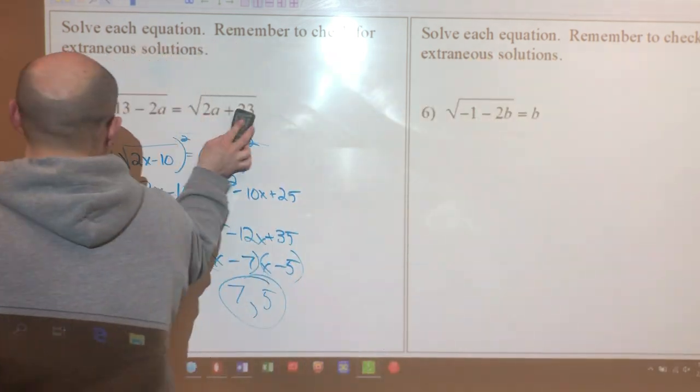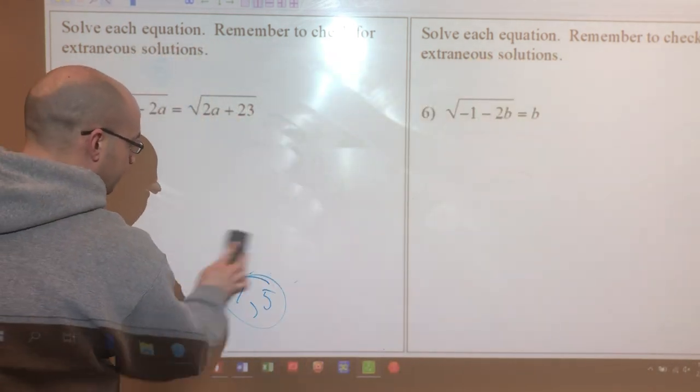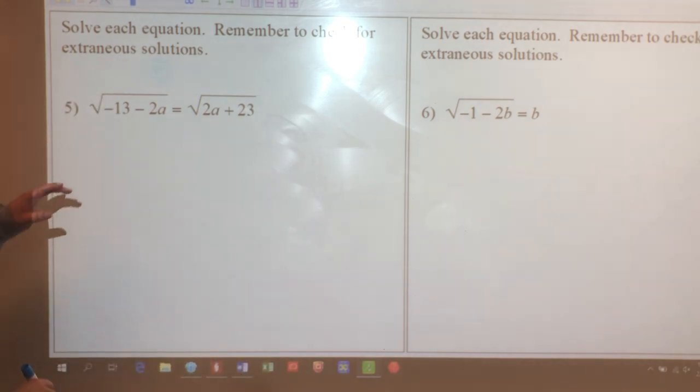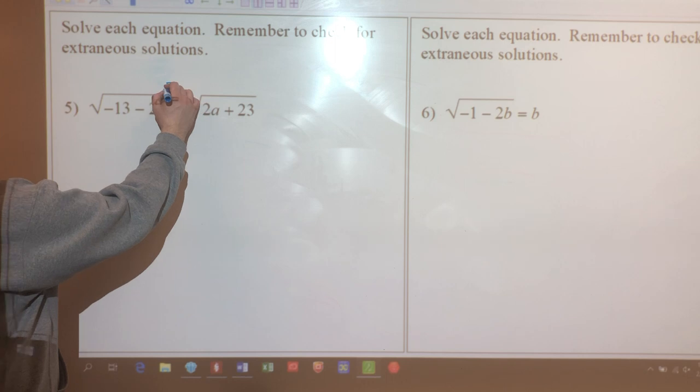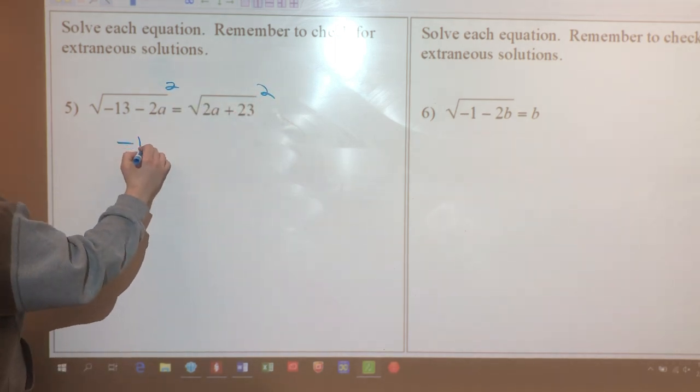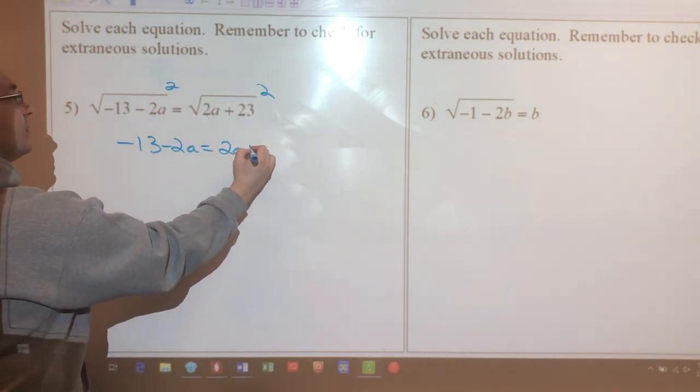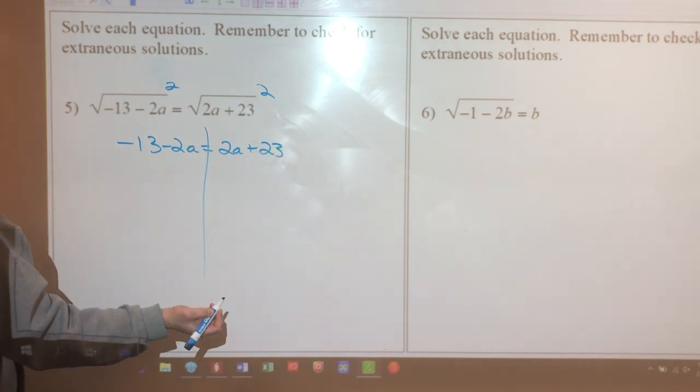Alright, radical on both sides of the equal sign. Just squaring both of them, and I'm gonna end up with something pretty nice: negative 13 minus 2a equals 2a plus 23. Pretty simple.